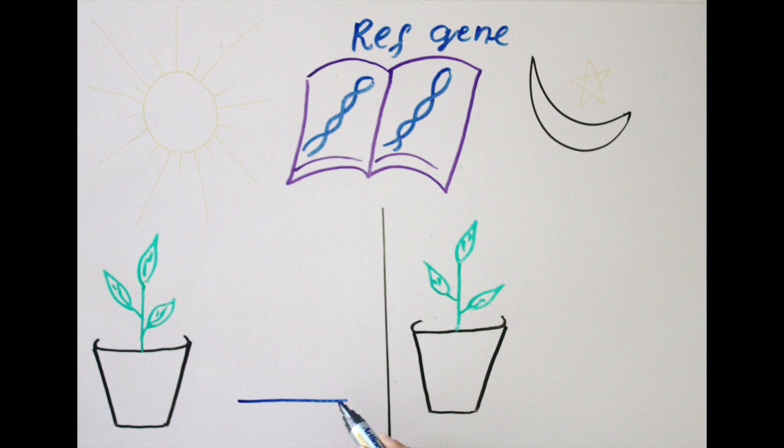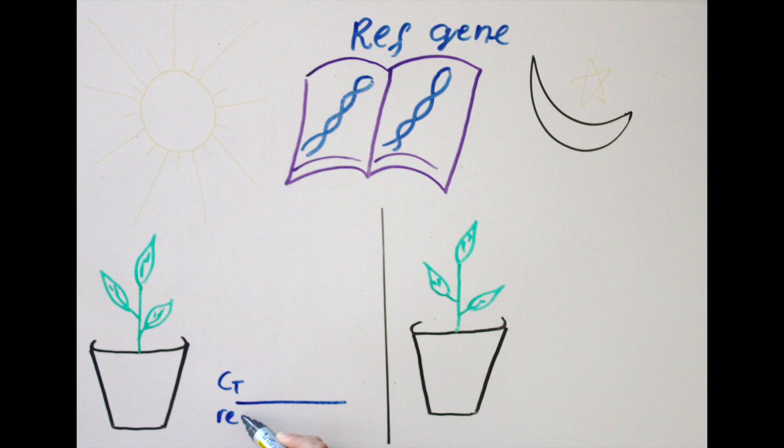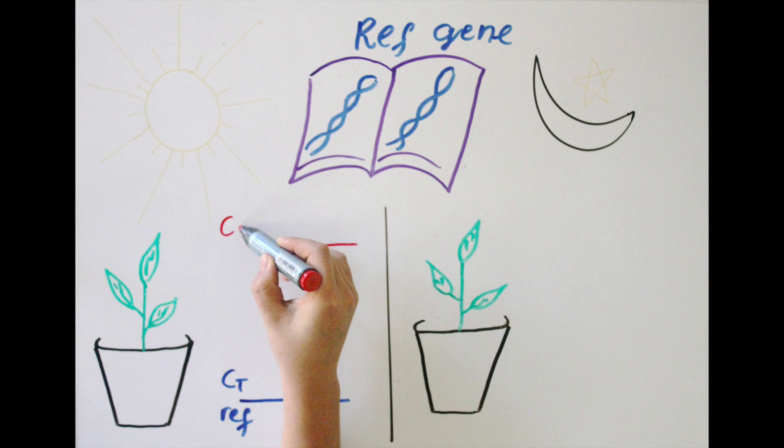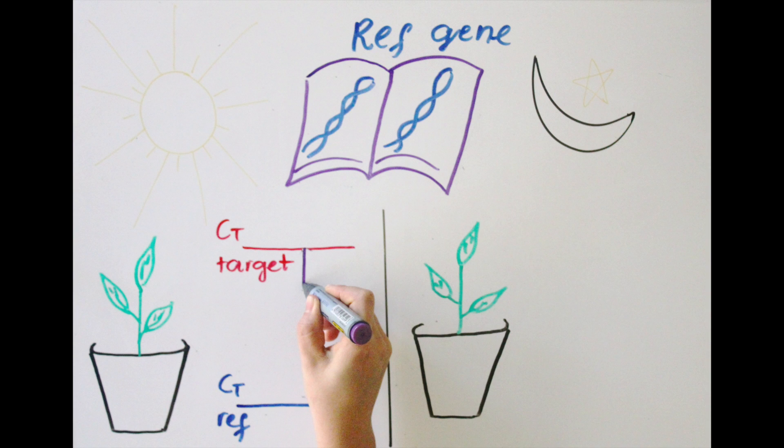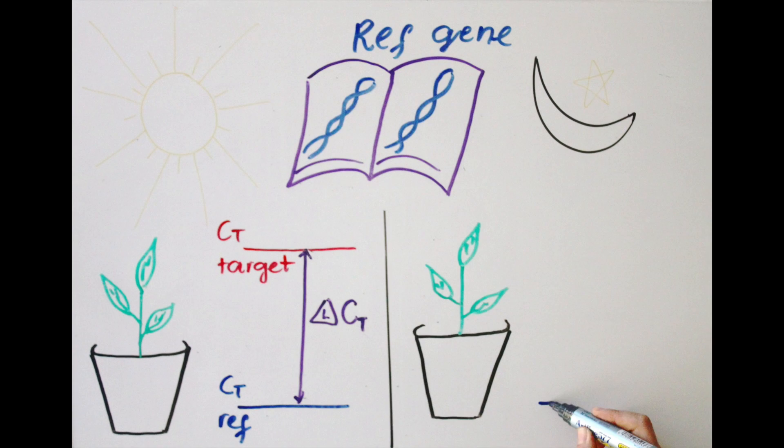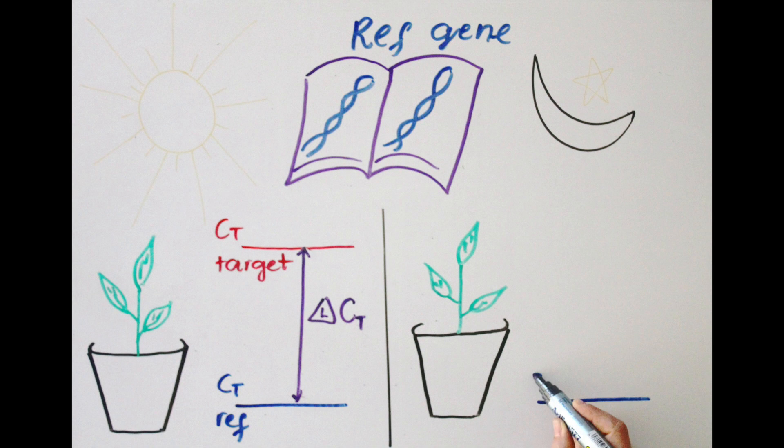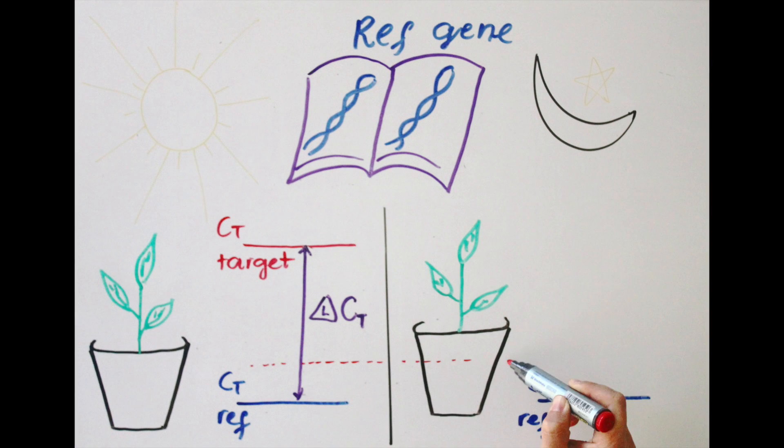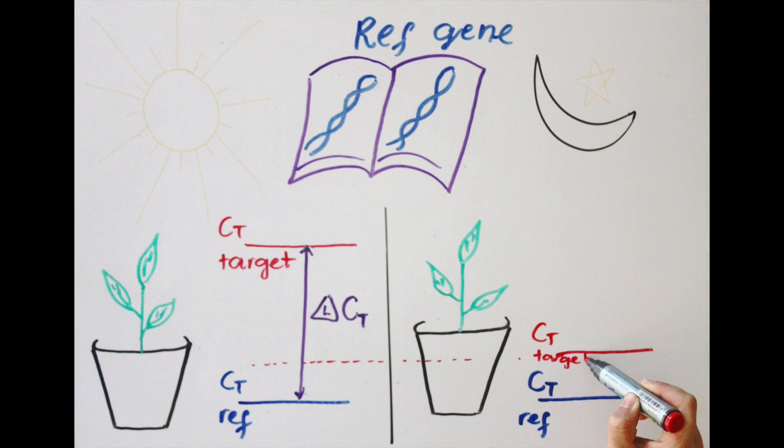For instance, in the dark treatment, the CT value of your reference gene is at this level. The CT value of your target gene is at this level. So you have this delta CT, which is the difference in CTs in the first treatment. In the dark treatment, the CT value of your reference gene is still at this level, but the CT value of your target gene may become only this much.